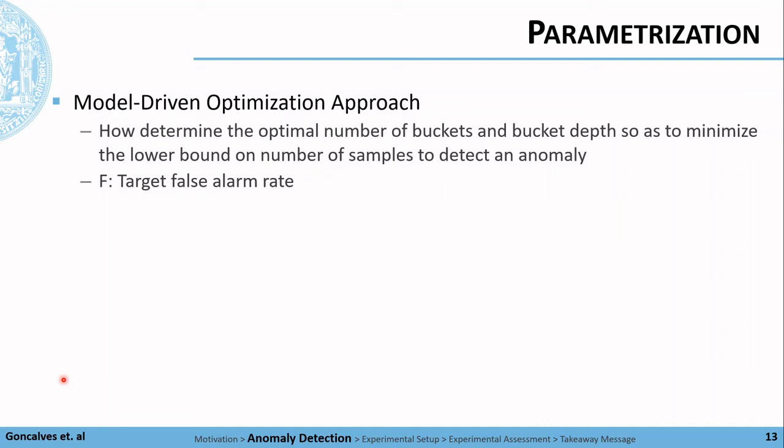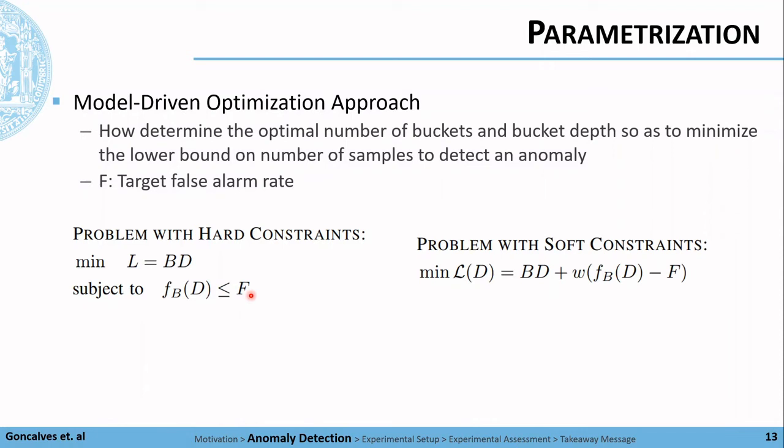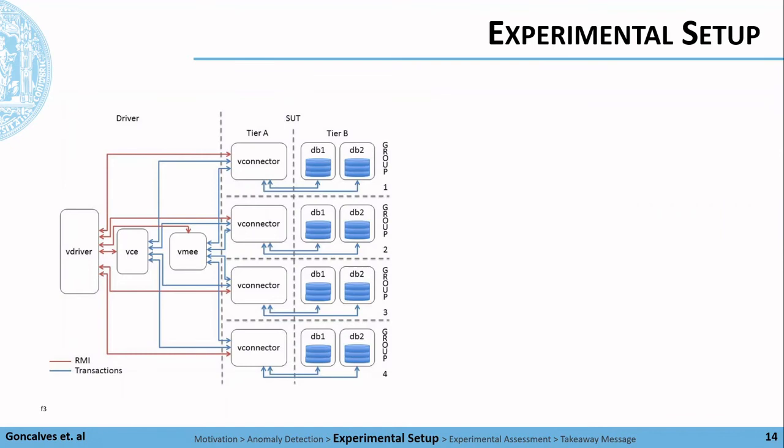Our work proposes a model-driven optimization approach, trying to answer the question of how to determine the optimal number of buckets and bucket depths so as to minimize the lower bound on the number of samples to detect an anomaly. We discuss an optimization method to parameterize the algorithm using an approach with hard constraints. We want to minimize the lower bound of the true positives subject to target false alarm rate of F. Alternatively, the problem can be formulated through the corresponding Lagrangian. More detail about the model and the optimization approach can be found in the paper.